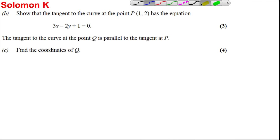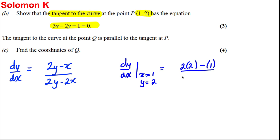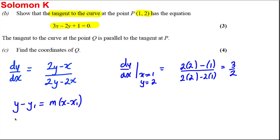Parts b and c: we're asked to show that the tangent to the curve at (1, 2) has a given equation. From part a we got dy/dx, so we're going to work out dy/dx when x equals 1 and y equals 2. Substituting in: (2×2 minus 1) all divided by (2×2 minus 2×1), which equals 3 over 2. That's the gradient of the tangent.